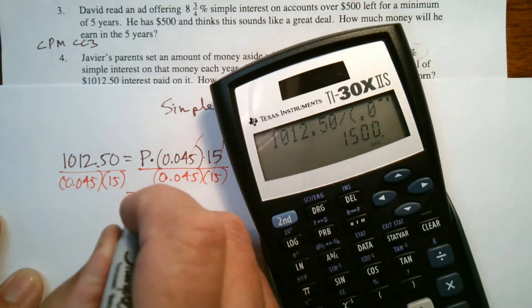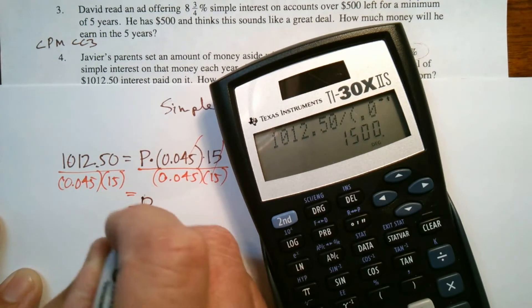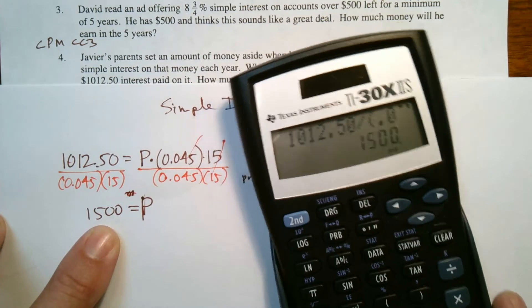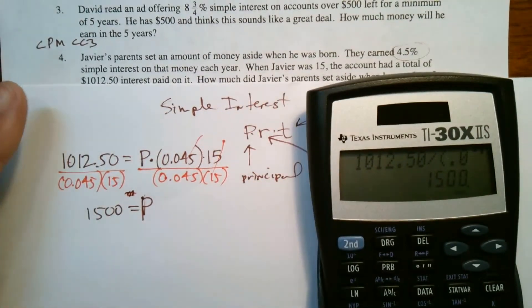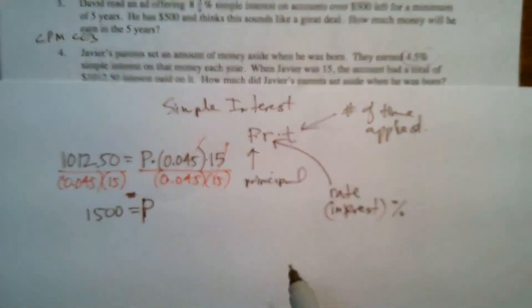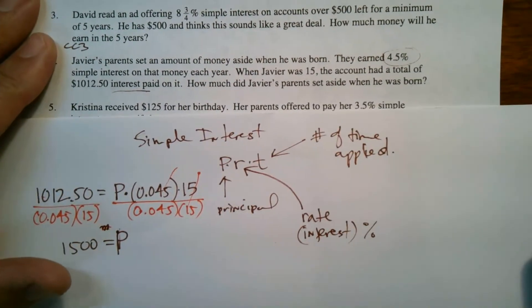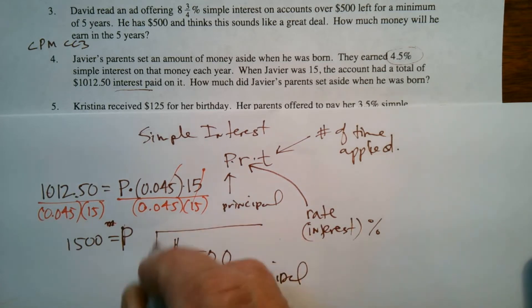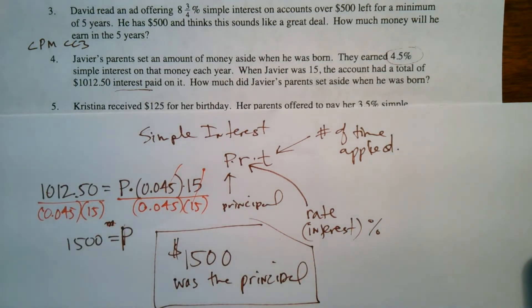So we're going to say 1,012 and 50 cents divided by the product of 0.045 times 15, enter. So there we go. So P is equal to 1,500. So that tells me that's the money that was originally set aside. That's the principle that we started with. So my answer in this case is $1,500 was the principle. There's number four and that's simple interest.